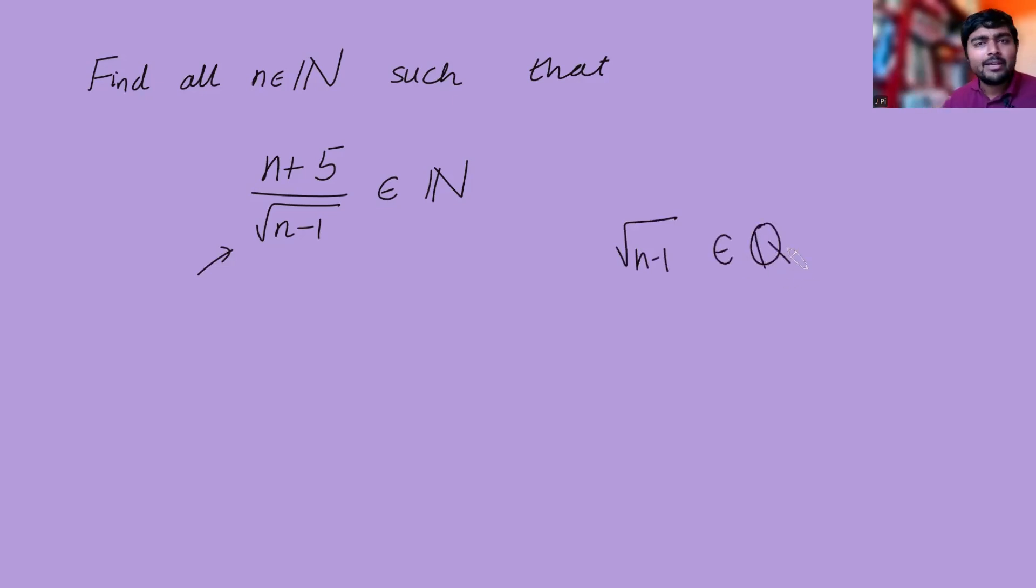Now here's a fact for you, which you may or may not know: if m is a positive integer, then there's two possibilities for the square root of m. The square root of m is either an integer—so for example, if m was 16, the square root of m is 4, and that's an integer—or the square root of m is irrational.